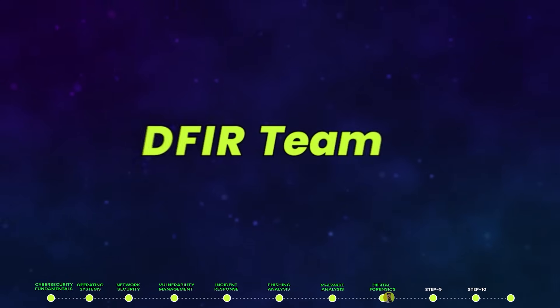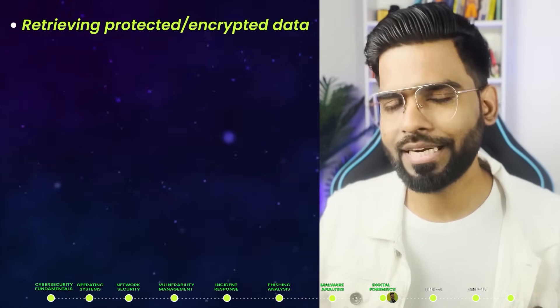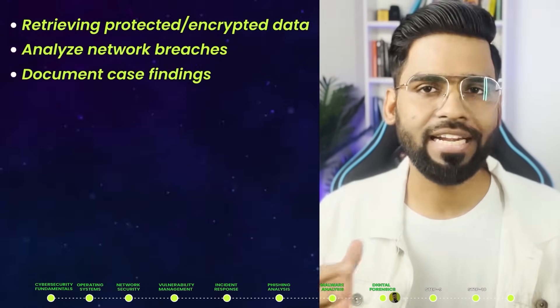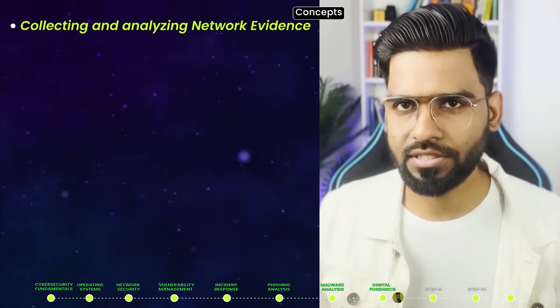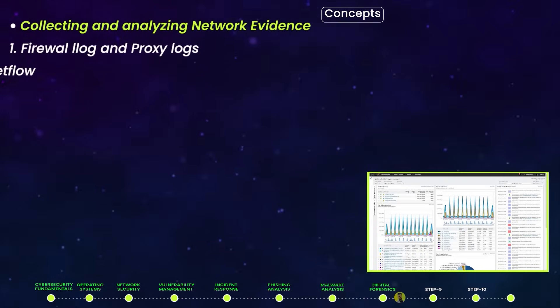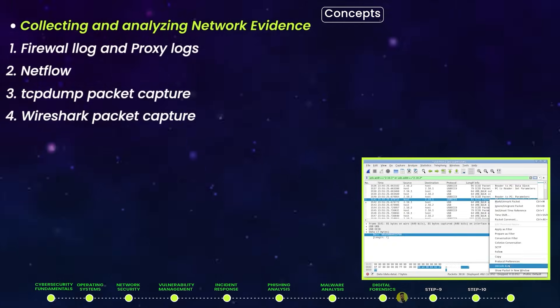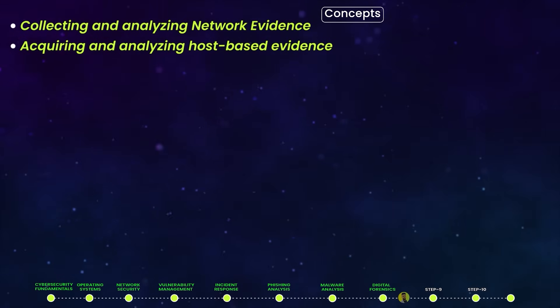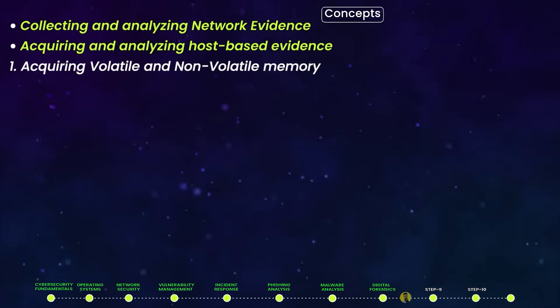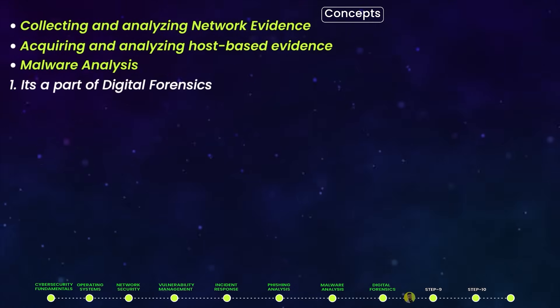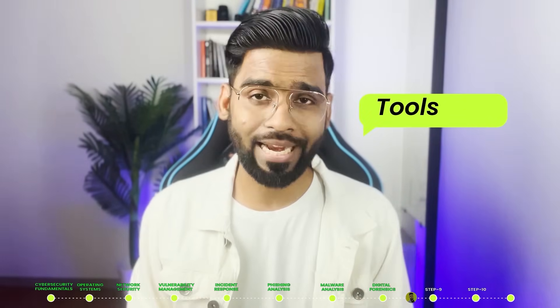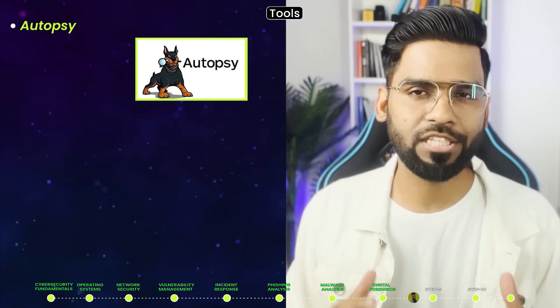Number eight: Digital Forensics. In mature organizations, digital forensics and incident response is managed by a single team called the DFIR team. As part of digital forensics, you will be involved in retrieving protected or encrypted data, analyzing network breaches, and documenting case findings. Key concepts include collecting and analyzing network evidence such as firewall logs, proxy logs, NetFlow, TCP dump, and Wireshark packet captures, as well as acquiring and analyzing host-based evidence including volatile and non-volatile memory.